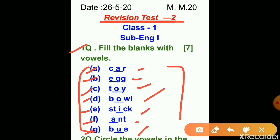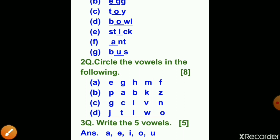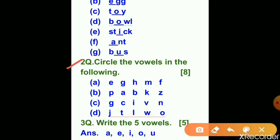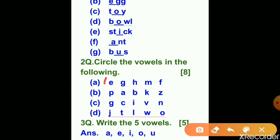Now question number two: circle the vowels in the following. Four parts are here. In part A: E, G, H, M, F — E is the vowel. In part B: P, A, B, K, Z — A is the vowel.